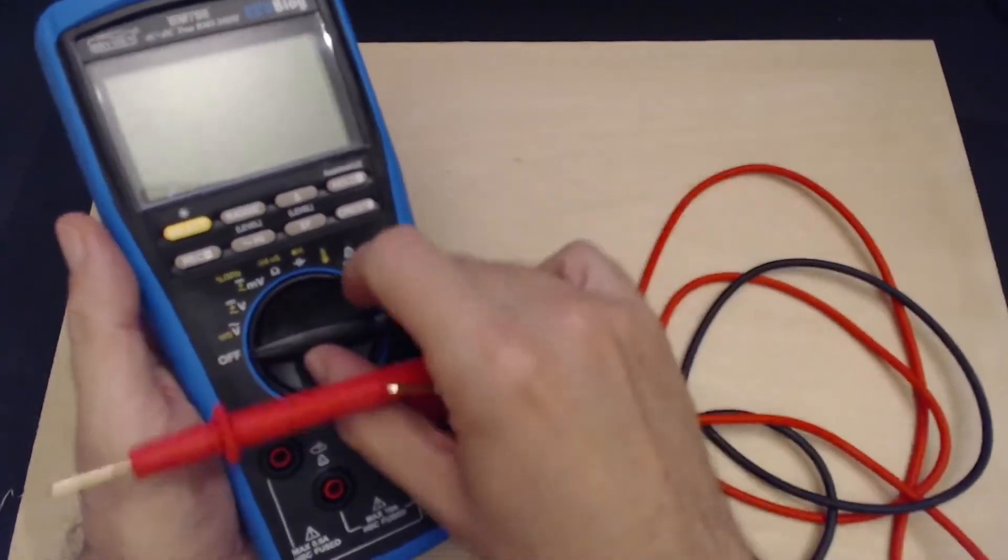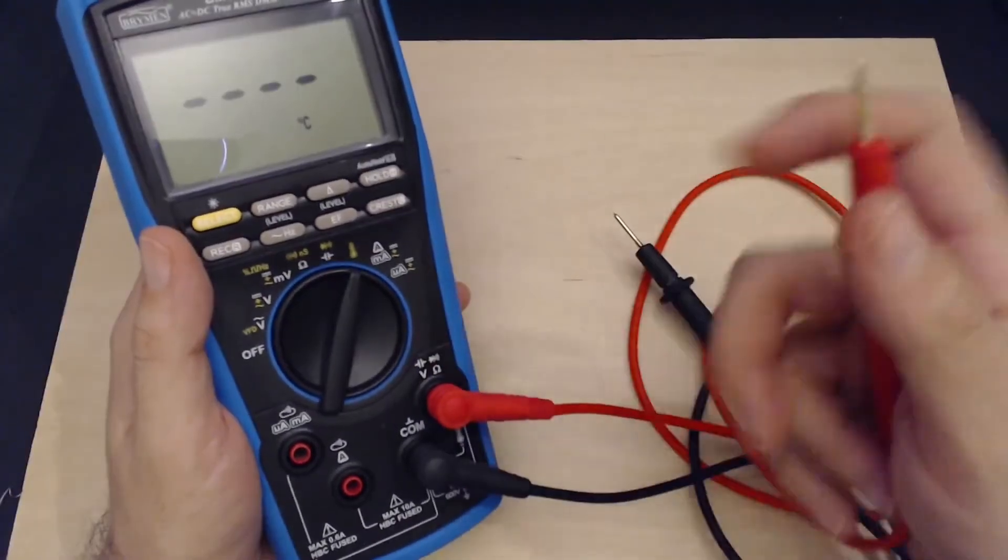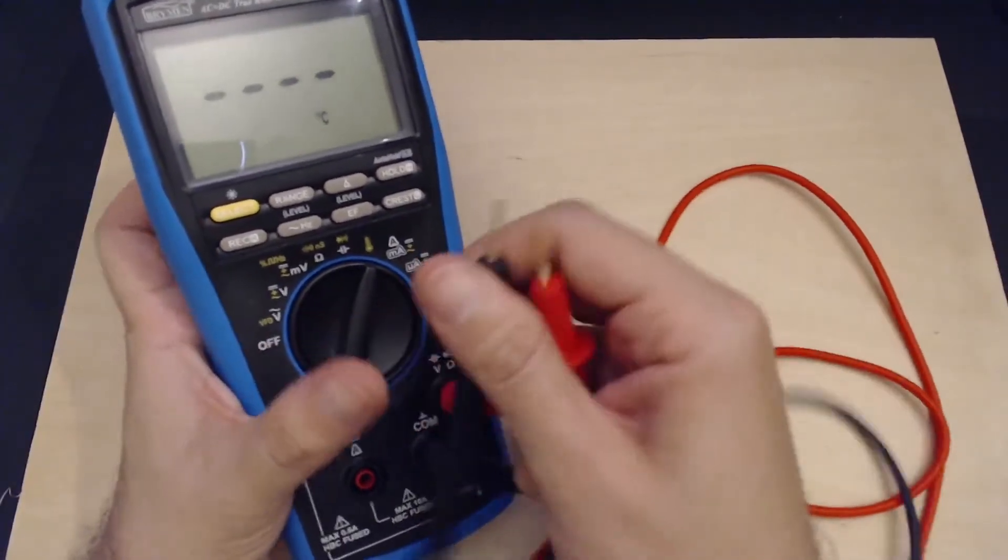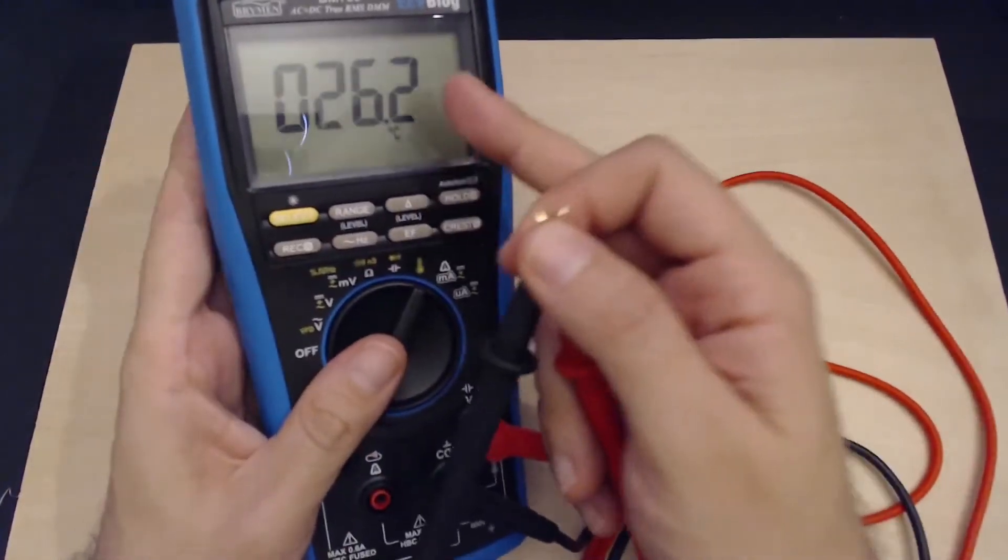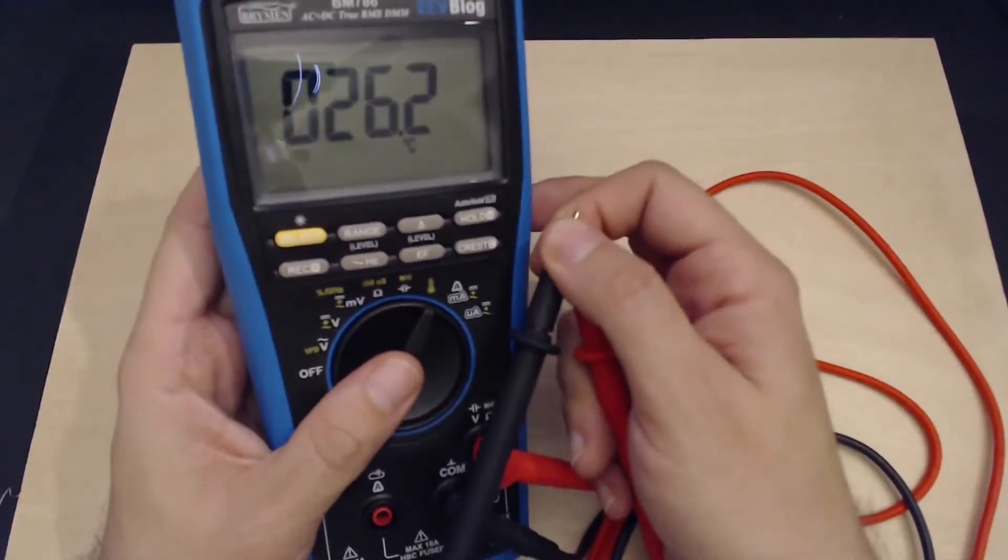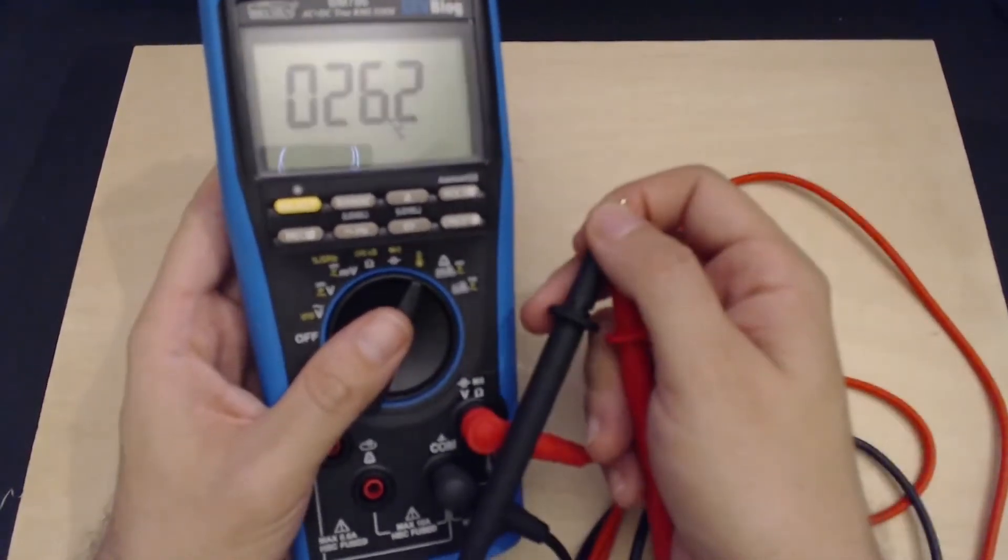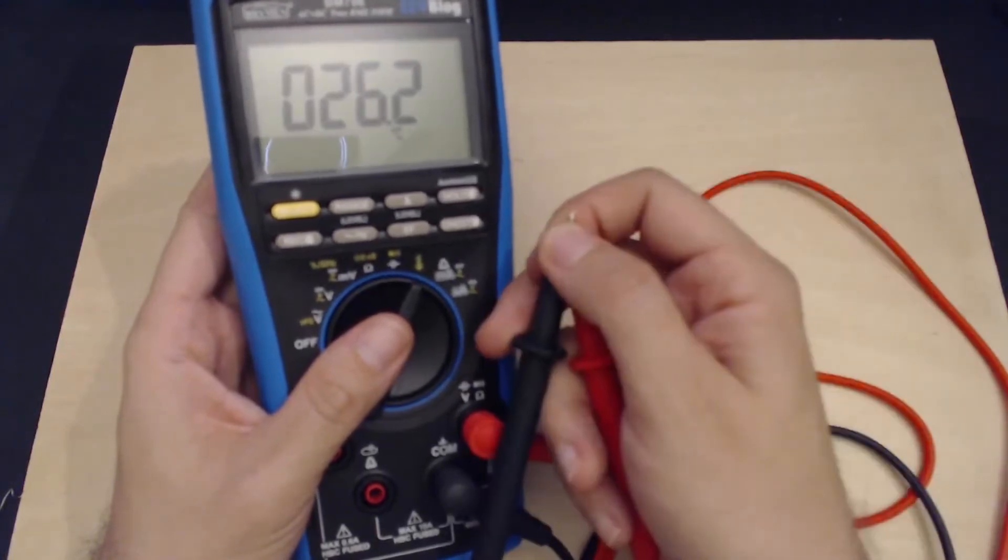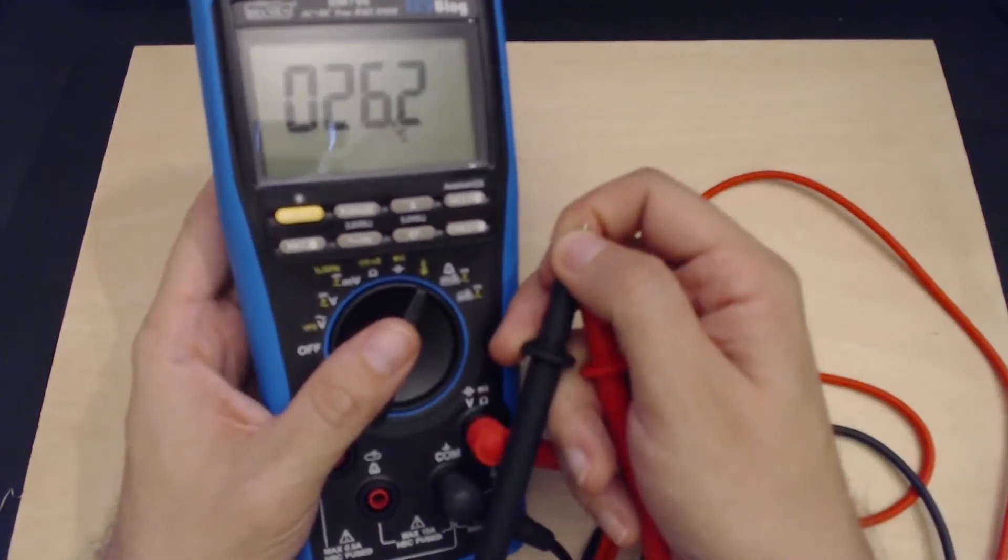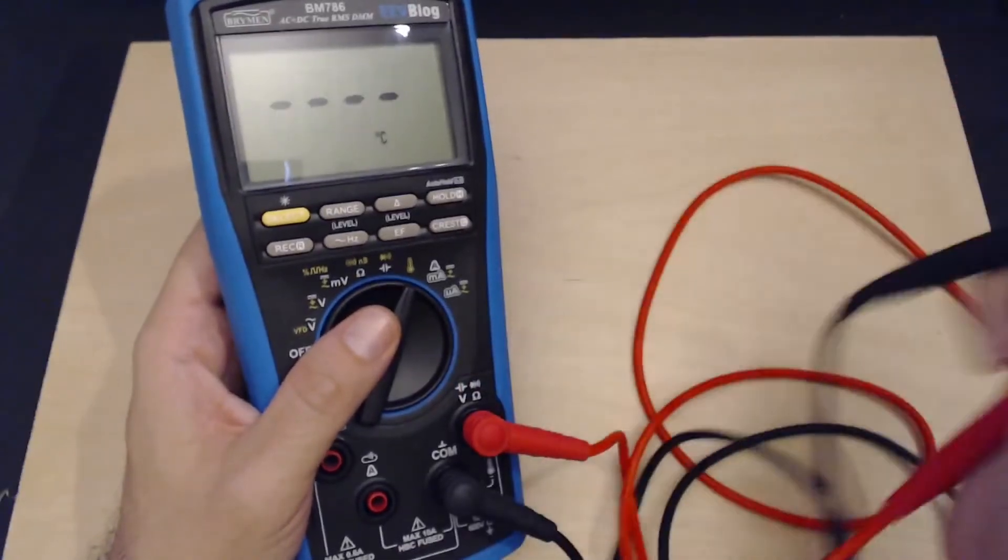On the good news front, I just learned something quite useful. When you're measuring temperature, you don't need to connect the thermocouple. You just short the probes and the multimeter gives you an internal temperature reading. This is quite handy, it's brilliant really. I can think of a couple of situations where this could be useful.